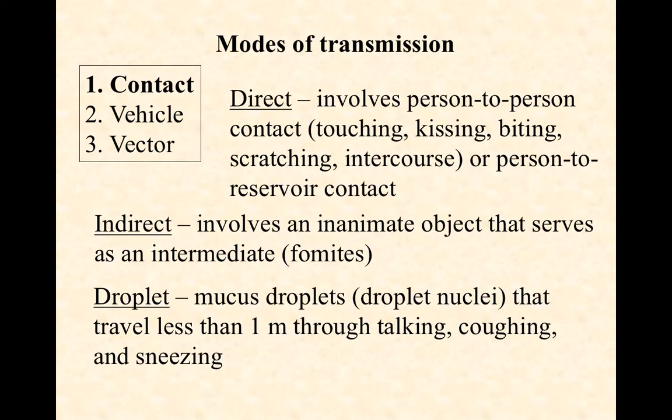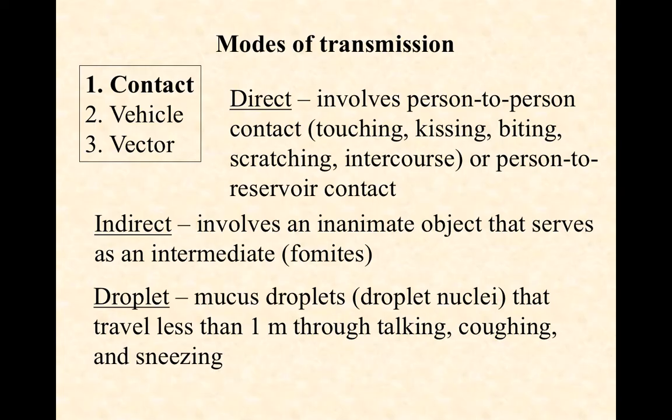With contact transmission, we have direct, indirect, and droplet transmission. Direct contact transmission means person-to-person contact: touching, kissing, scratching, sexual intercourse, or in some cases person-to-reservoir contact where the reservoir is an animal. For example, avian influenza H5N1 is transmitted from an infected bird directly to a human being through direct contact transmission.